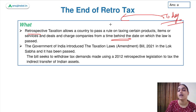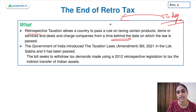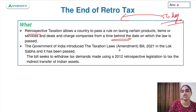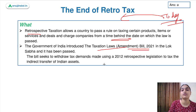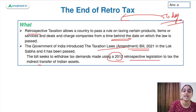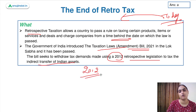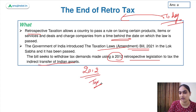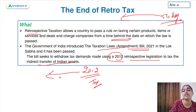Many companies filed cases that they should not be taxed in India for indirect transfers. One such major case was that of Vodafone. The government introduced this bill, the Taxation Laws Amendment Bill, which seeks to withdraw tax demands made using the 2012 retrospective legislation to tax the indirect transfer of Indian assets. The rule came in 2012 stating that if you are indirectly transferring Indian assets, you have to pay tax — applicable to deals which happened before 2012 as well.